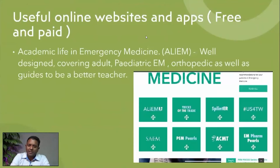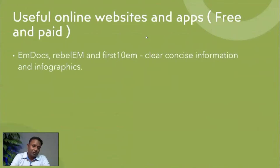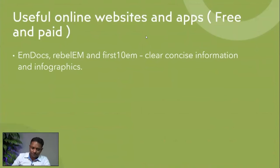The second one is Academic Life in Emergency Medicine, or ALiEM — more academically oriented but with really good output, with different sections for different topics. Then you have the MDocs website, Rebel EM, and First10EM — just Google them and you'll land on the site. They have clear, concise, mostly peer-reviewed information, and some have really nice infographics that let you get the gist of things much more easily than reading through many pages.